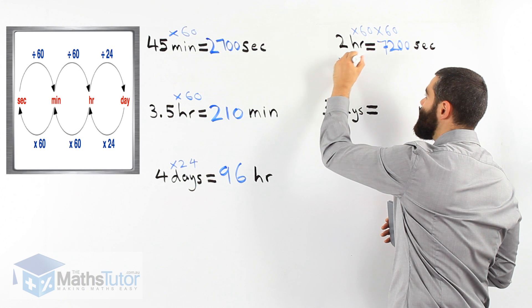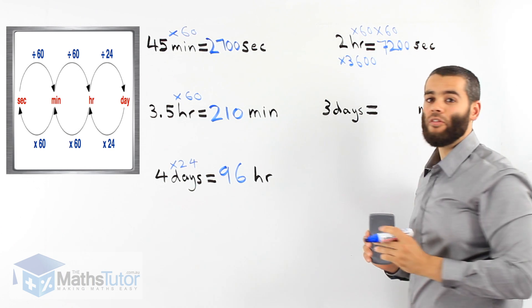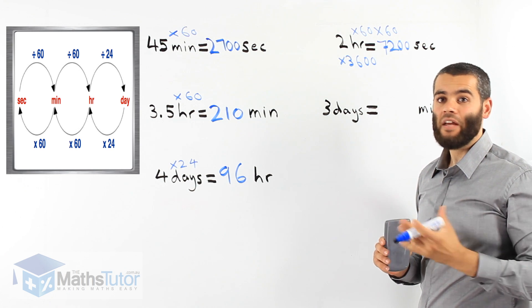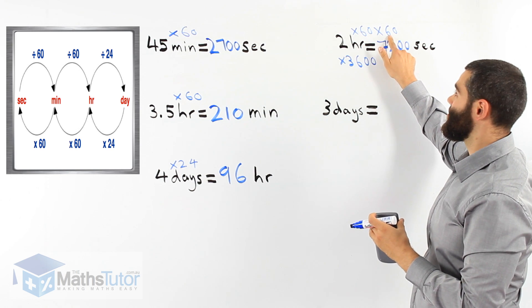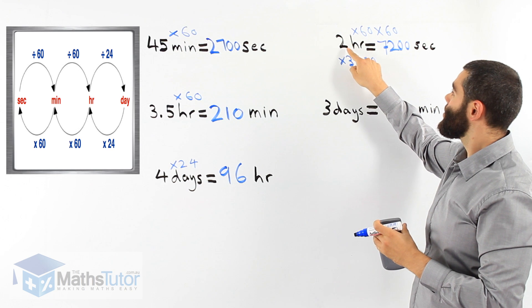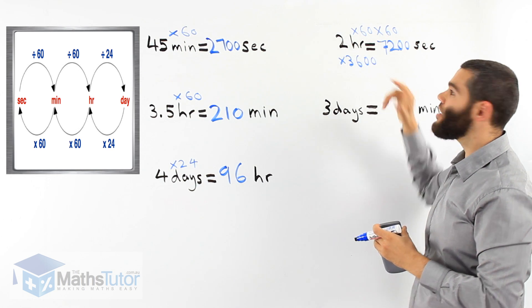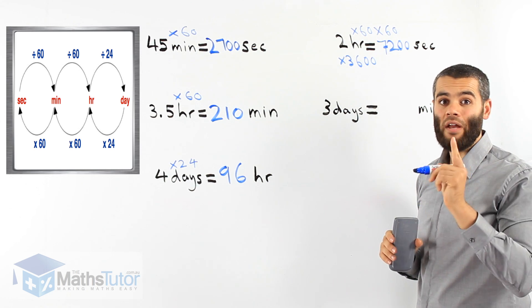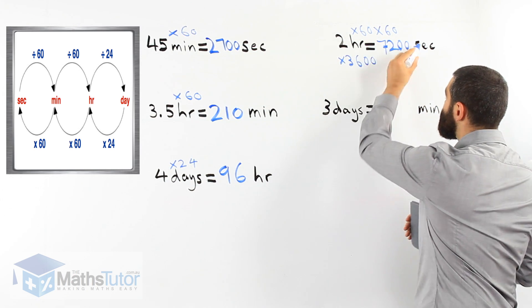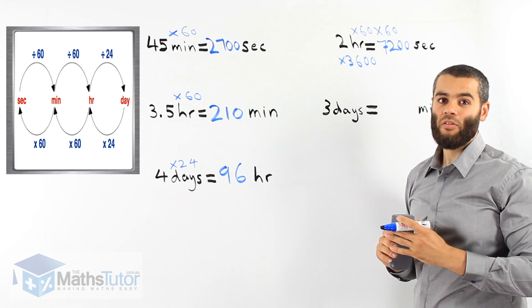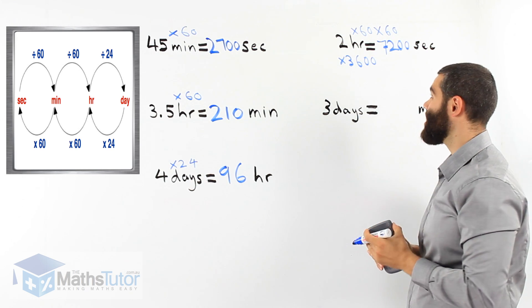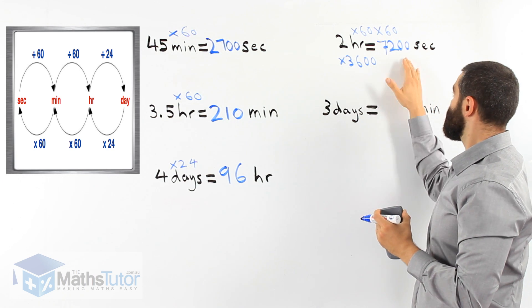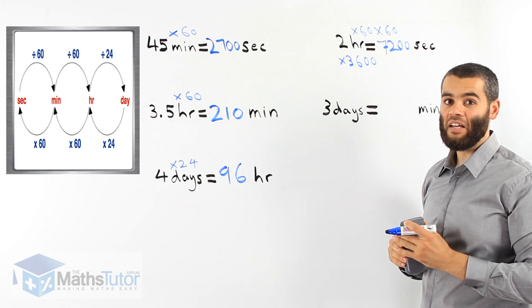I always tell my students: whenever you're converting from hours to seconds, always remember that you're multiplying by 3,600, because there are 3,600 seconds in an hour. Where do I get that number? 60 times 60. So instead of doing two times 60 times 60, another way to remember is two times 3,600, which is the same thing — giving 7,200 seconds.